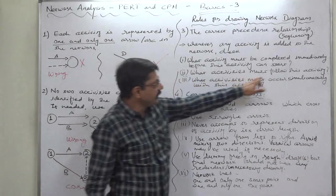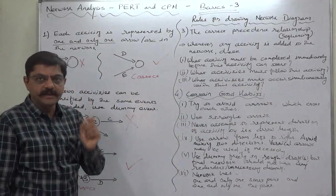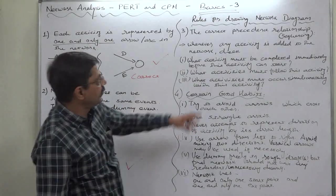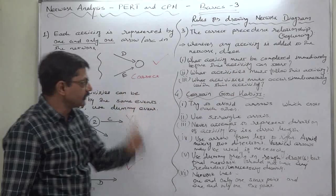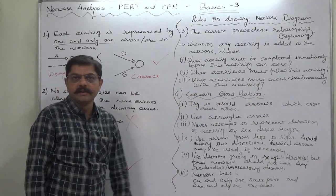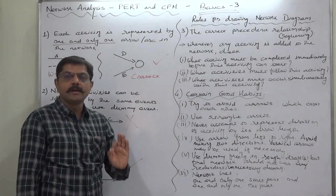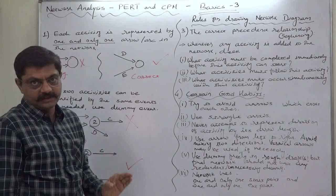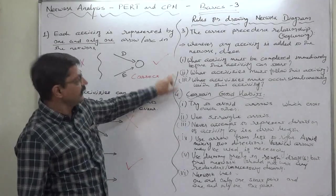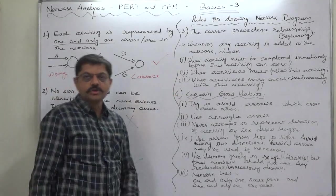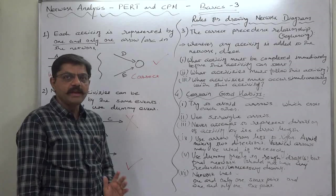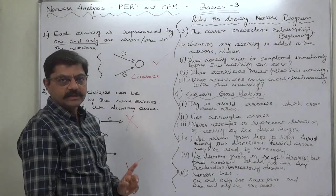Number two, what activities must follow this activity? That means, we must be clear about the successor or successors of the activity we are going to add to the diagram. Number three, what activities must occur simultaneously with this activity? That means, we must also be clear about the concurrent activities. So, this question is about the predecessor, successor and concurrent. We should be always clear about all these three kinds of activities whenever we add an activity to the network diagram.